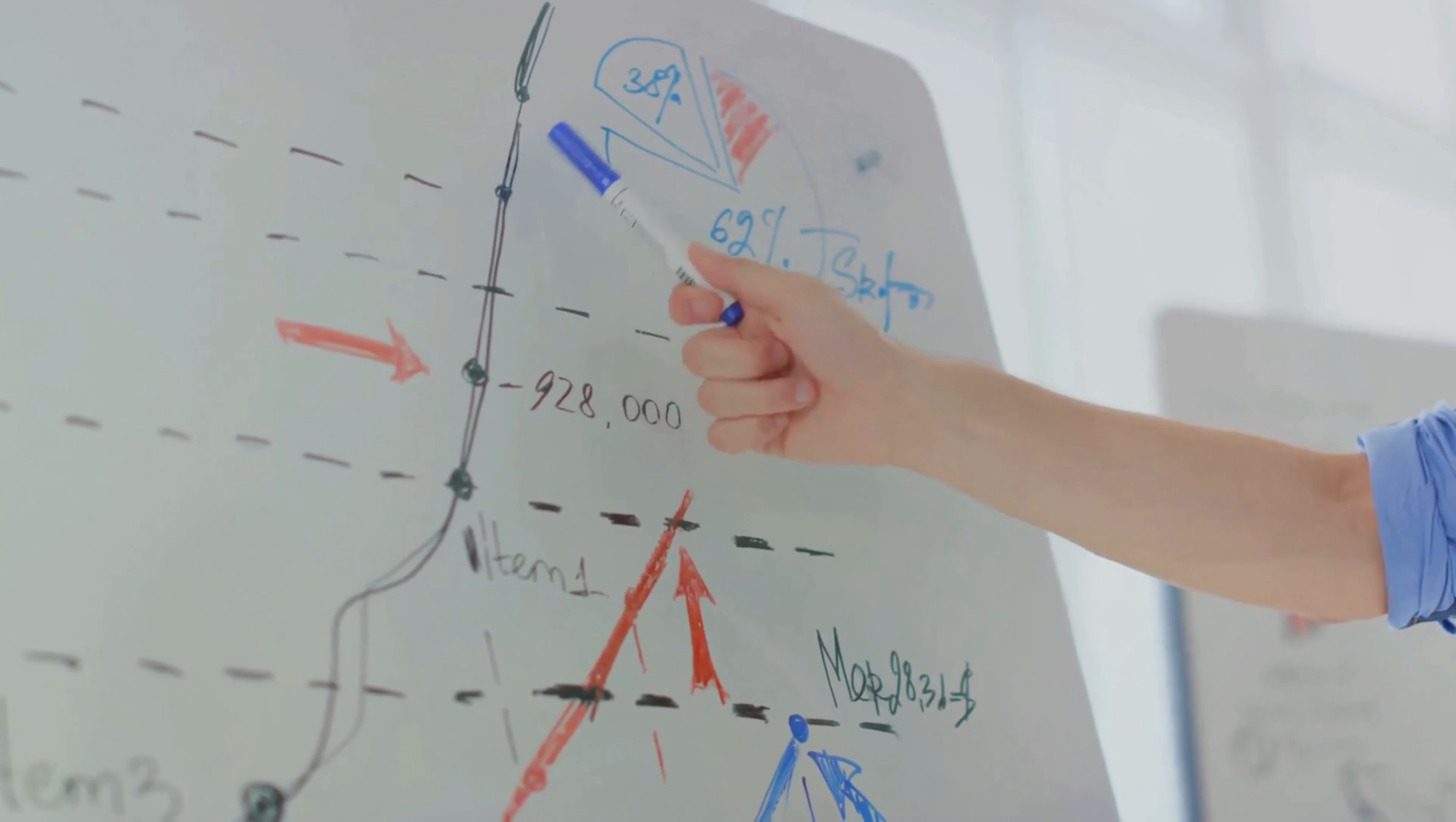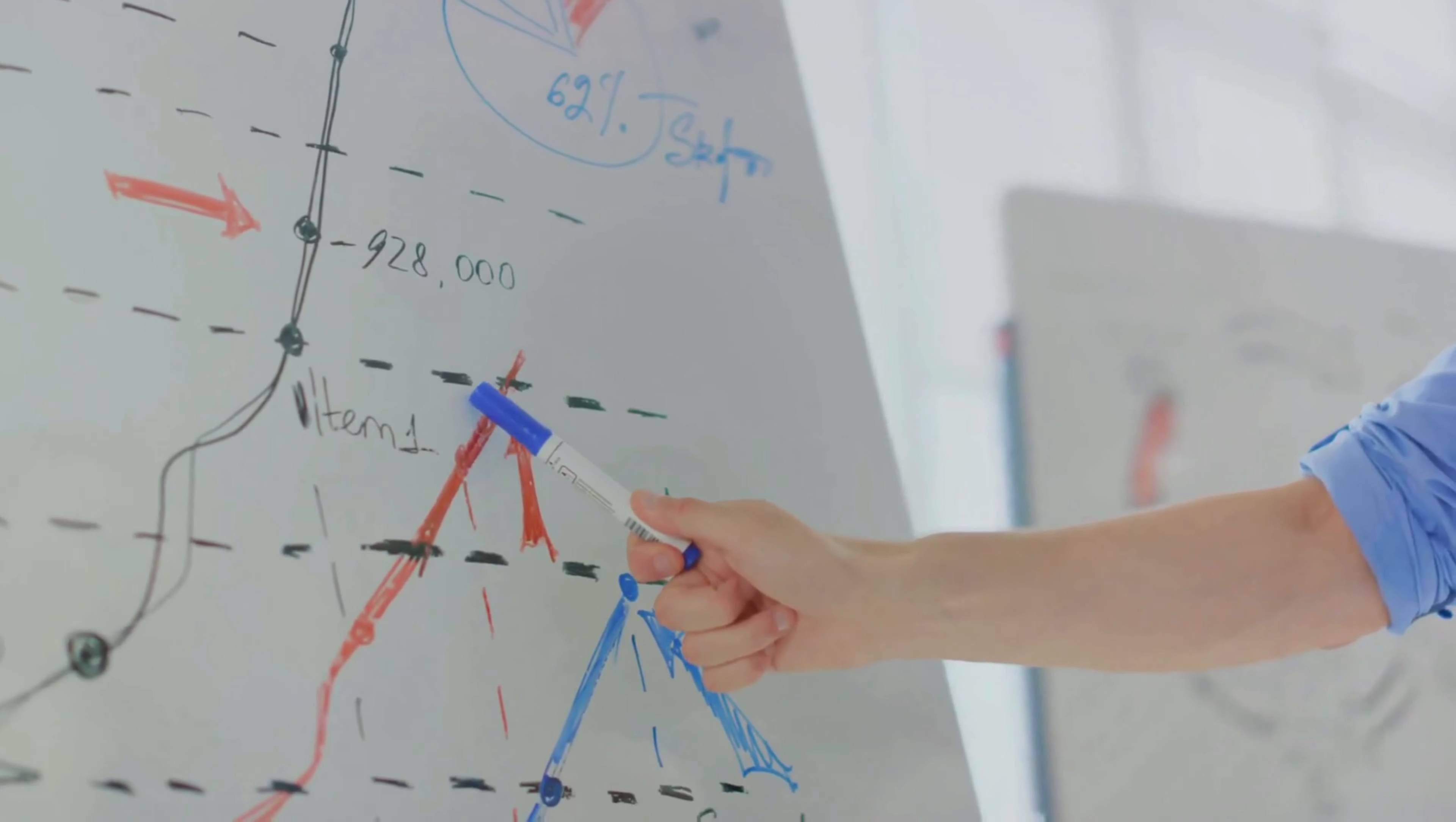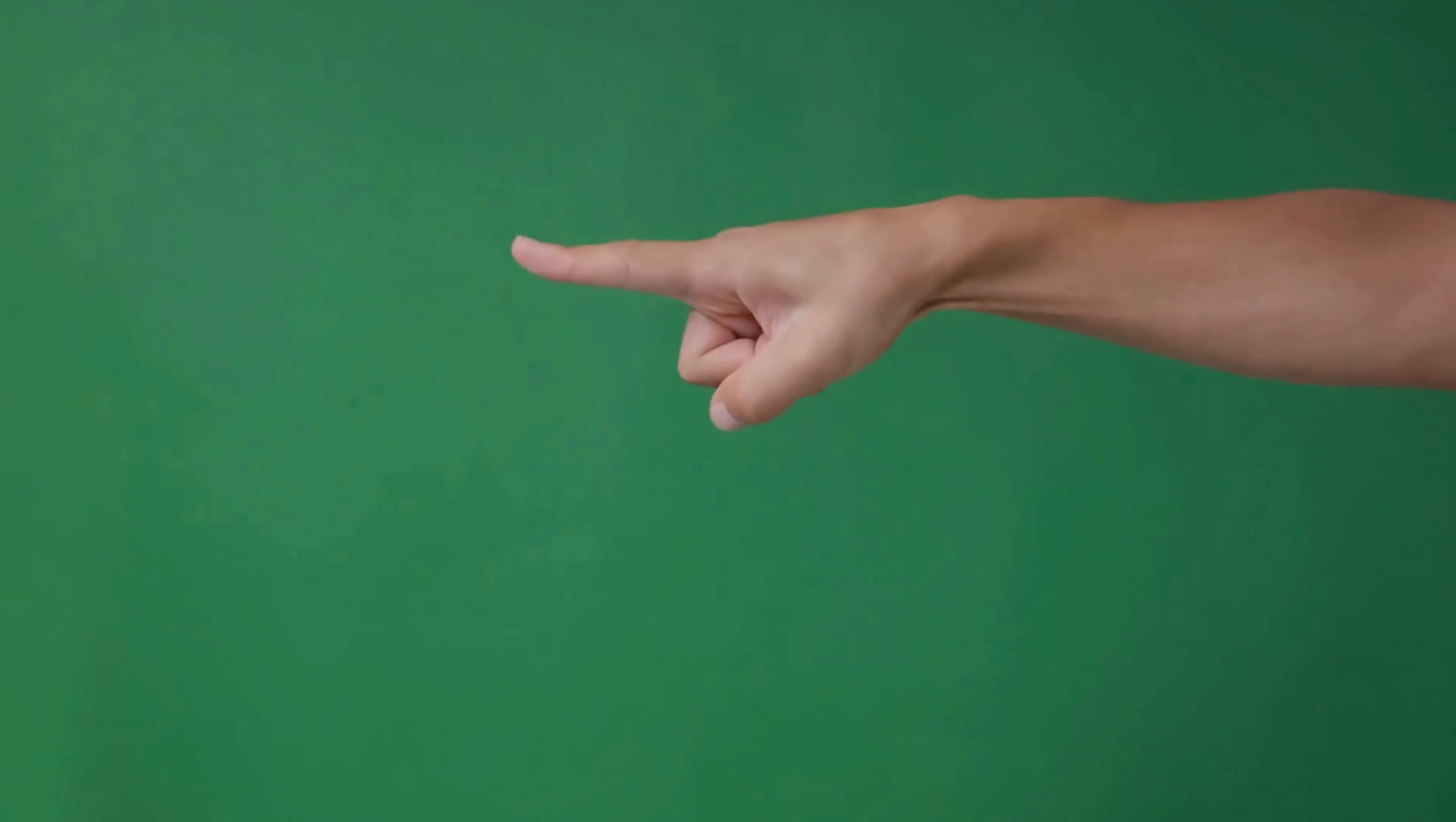Next up, the median. The median is the middle value in a data set when arranged in ascending or descending order. It's a robust measure of central tendency as it's not affected by outliers. However, the median doesn't tell us anything about the dispersion of data.